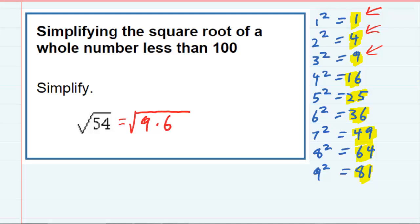And the reason that I want to do that is rewriting it as 9 times 6 means that the 9, which is a perfect square, can come outside of the radical.